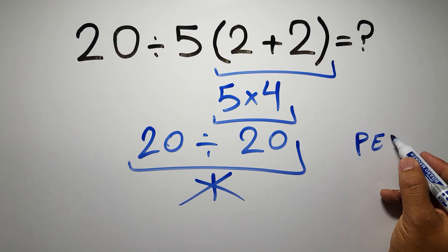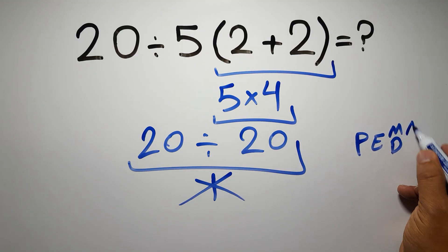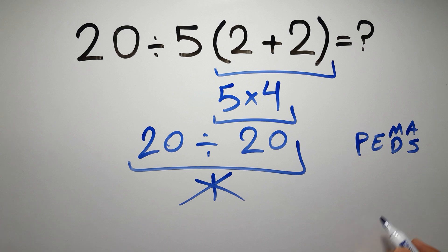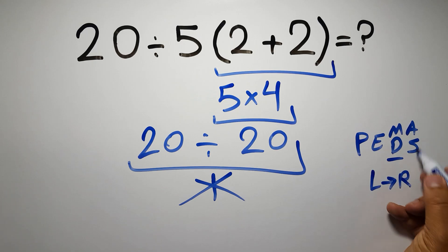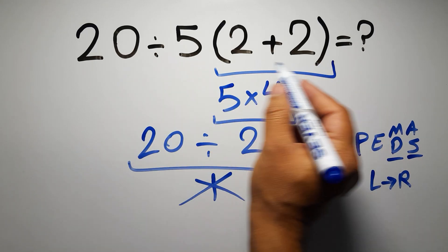exponents, then multiplication or division, and finally addition or subtraction. Remember that multiplication and division have equal priority and we have to work from left to right, and the same applies to addition and subtraction. In this expression we have